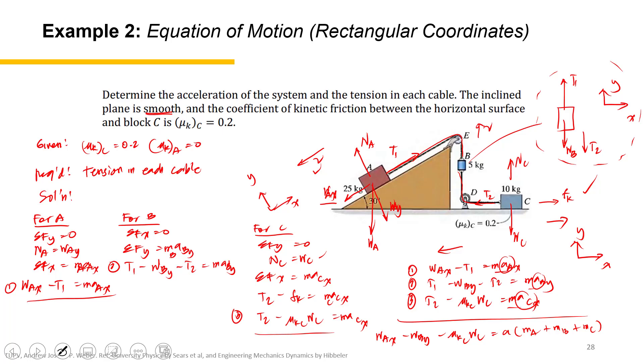So first, let's solve for the value of a. So 25 times 9.81 times sine 30 minus 5 times 9.81 minus mu_K C, mu_K is 0.2. W_C is just 10g. It's equal to a. The mass of A is 25, plus the mass of B is 5, and the mass of C is 10, and of course all are in kilograms.